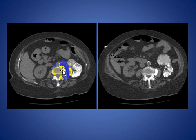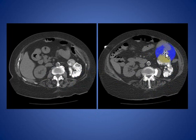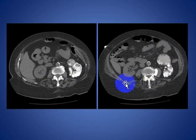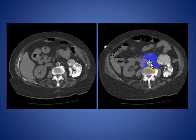Here you see calcification involving the left kidney. This is due to tuberculosis, causing autonephrectomy. You also see incidental calcification involving the aorta.